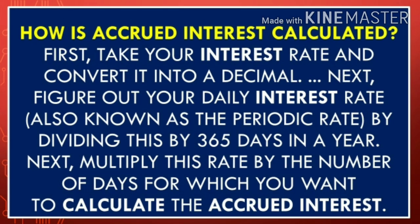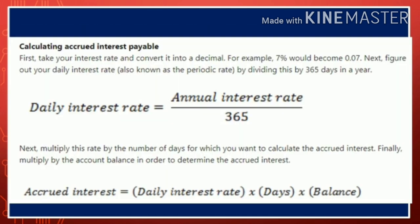How is accrued interest calculated? First, take your interest rate and convert it into a decimal. Next, figure out your daily interest rate, also known as the periodic rate, by dividing this by 365 days in a year. Next, multiply this rate by the number of days for which you want to calculate the accrued interest. The formula is: accrued interest equals daily interest rate times days times balance.